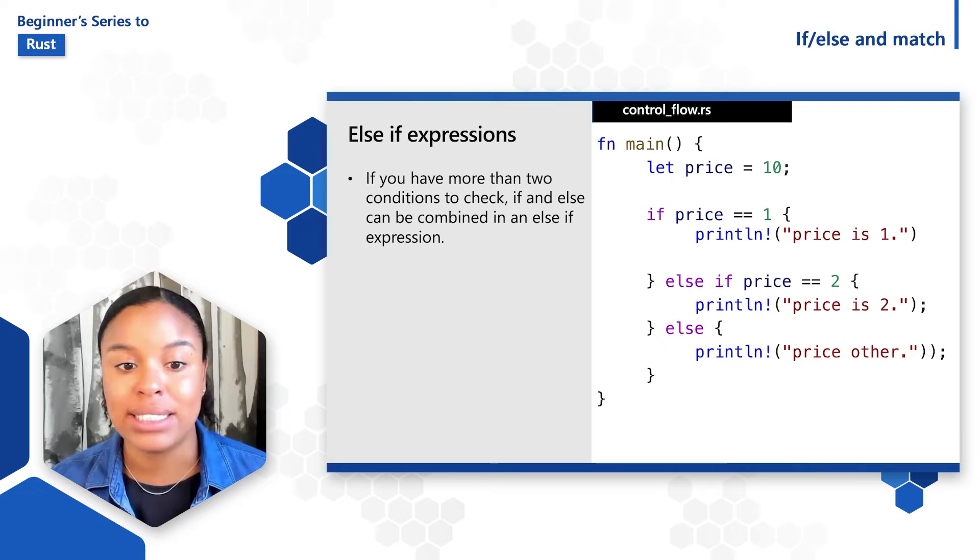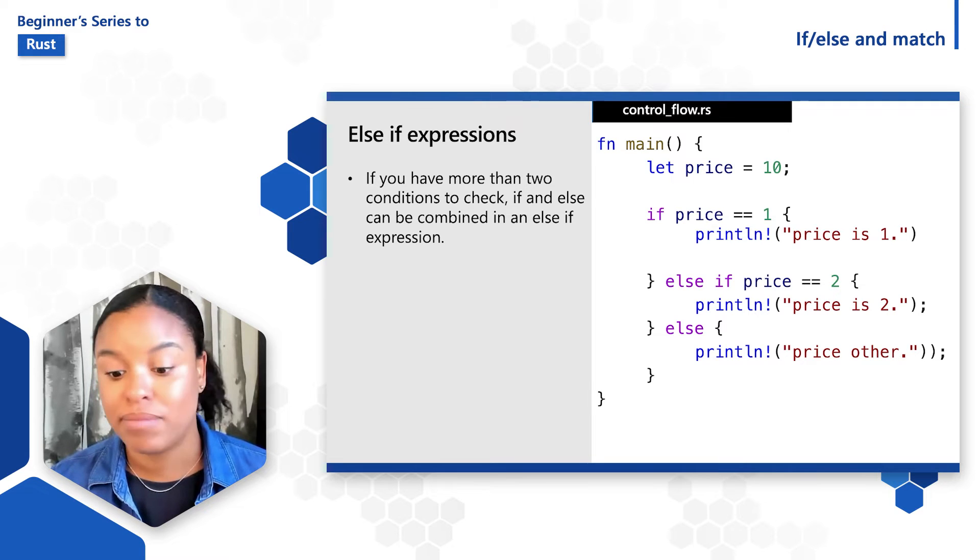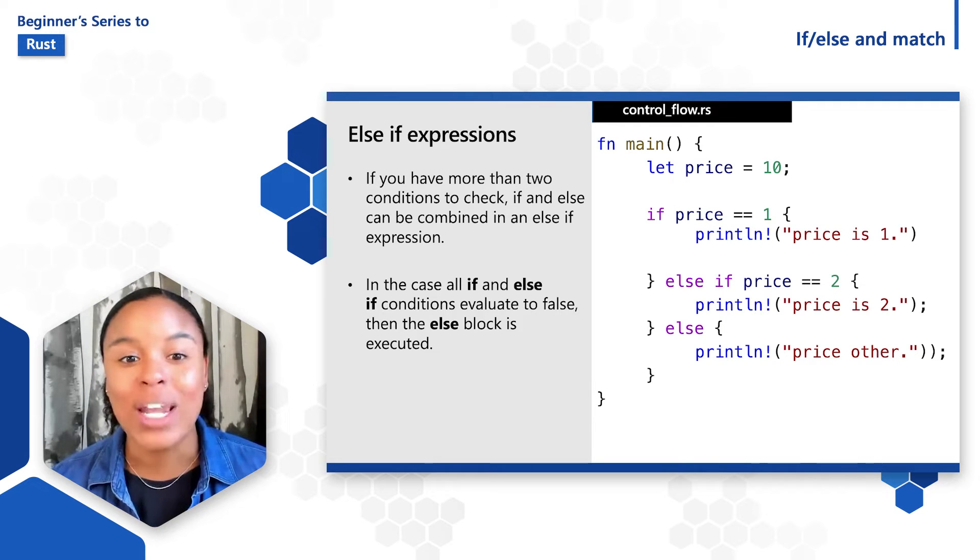For example, if price is equal to one, print the price is one, else if price is equal to two, print the price is two, else print price other. In the case all if and else if conditions evaluate to false, then the else block is executed.